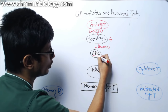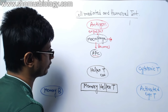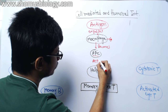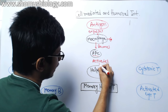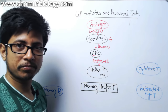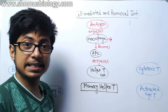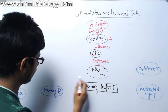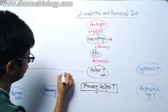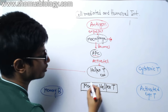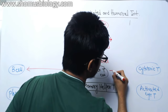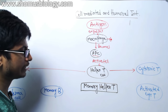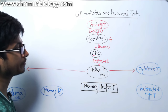Once it is showcasing the antigen through antigen presentation, it activates the helper T cell. Once the helper T cell gets activated, these cells further activate either B cells or cytotoxic T cells — it can activate both types of cells.